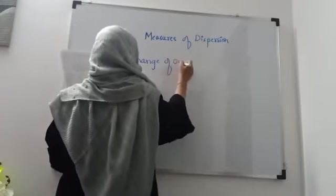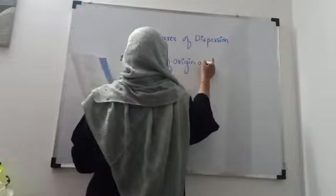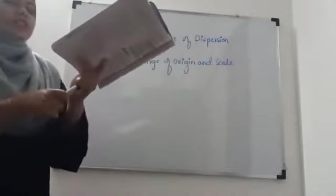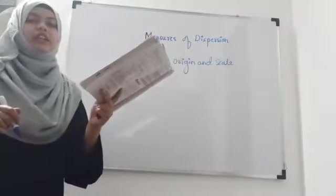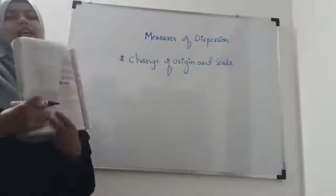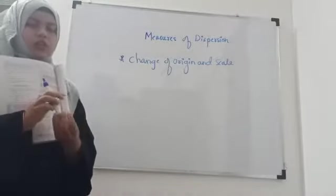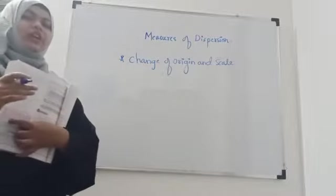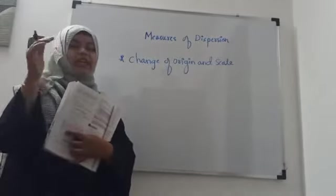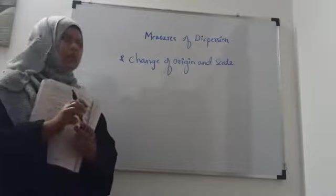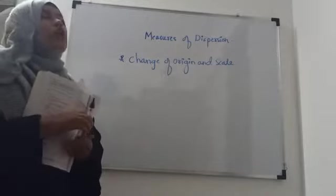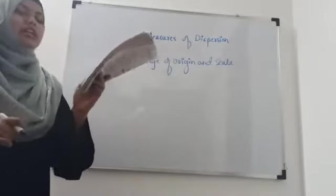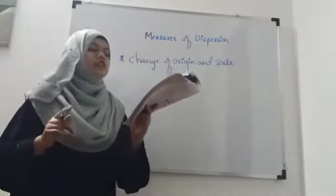Change of origin and scale. We have seen variance and standard deviation for different types of data in the previous class. There is one method which is very useful to find out the variance when the quantities — the x's — are large in magnitude. For that we will see this concept: change of origin and scale. The variance and the standard deviation are independent of the change of origin.